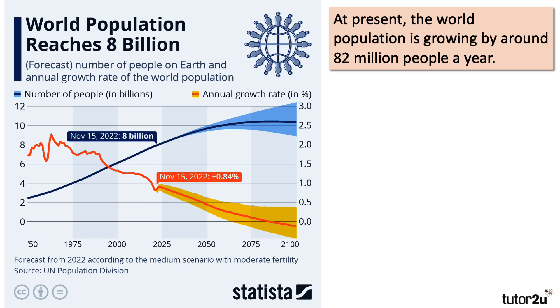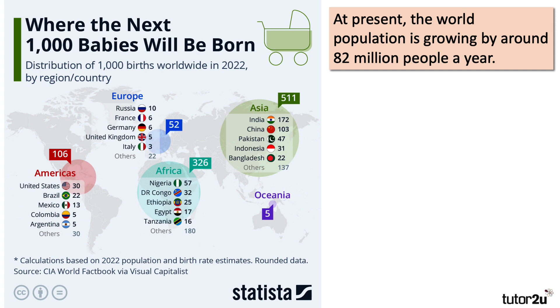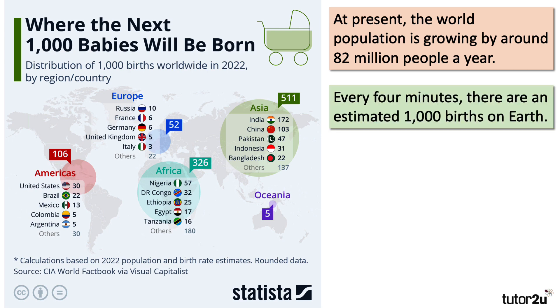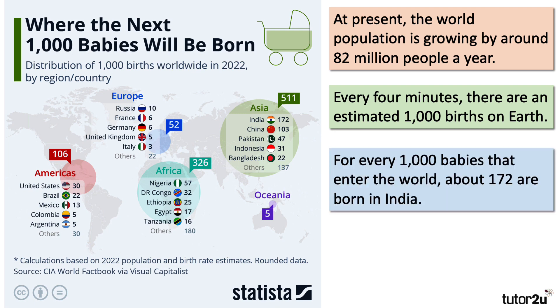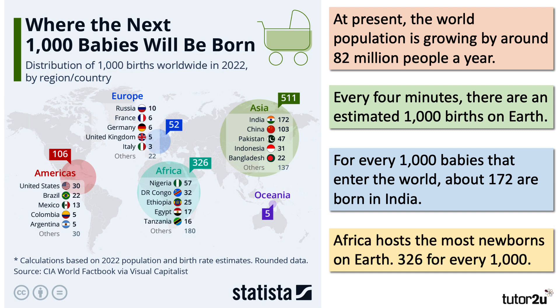This infographic from Sysista shows it quite nicely. Although the population of the world continues to grow, the growth rate is slowing down. At present, the world population grows by around 82 million people a year. So where are the new babies being born? Every four minutes, there are about 1,000 births on Earth. For every 1,000 babies that enter the world, about 172 are born in India and just over 100 are born in China, so India and China account for 27% of all newborn babies. But Africa hosts the most newborns on Earth — 326 for every 1,000. Indeed, virtually all of the nearly 2 billion net additions to the world population projected over the next three decades will occur in less developed regions.